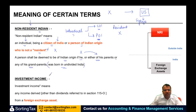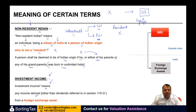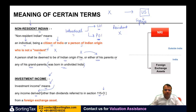Now what is the meaning of investment income? Investment income means — and this definition is exhaustive — any income derived, other than dividends referred to in section 115O. Those dividends are the ones that are exempt in the shareholder's hands. This income must be derived from a foreign exchange asset. If an NRI has a foreign exchange asset, what does this mean? Let us look at what a foreign exchange asset is.